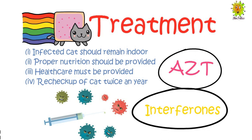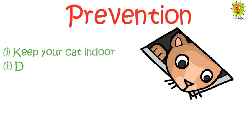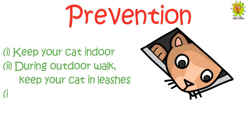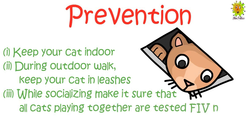Now we see how FIV can be prevented. An FIV vaccine is available, but it does not necessarily protect the cat and is also responsible for giving false positive test results. To protect the cat, the following measures should be adopted: keep your cat indoors, use leashes during outdoor walks, and make sure all cats playing together have tested FIV negative.